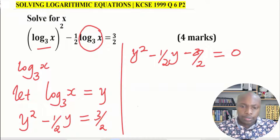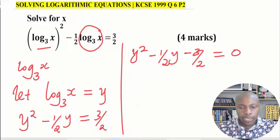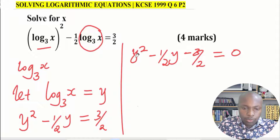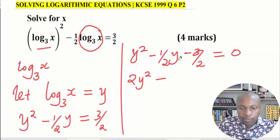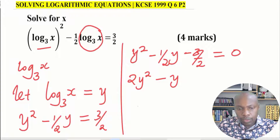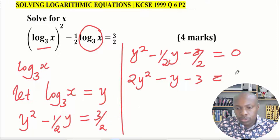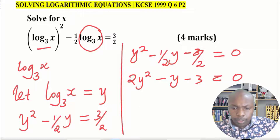To make this equation easier to solve, we eliminate the denominator of 2 by multiplying each term by 2. Multiplying y squared by 2 gives 2y squared; half y times 2 gives y; and negative 3 over 2 times 2 gives negative 3. So we get 2y squared minus y minus 3 equals 0.